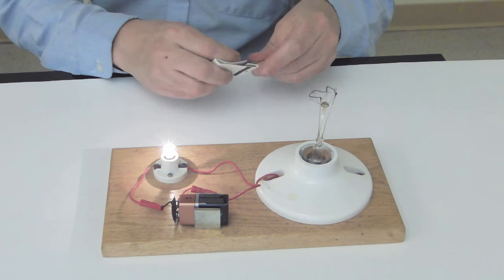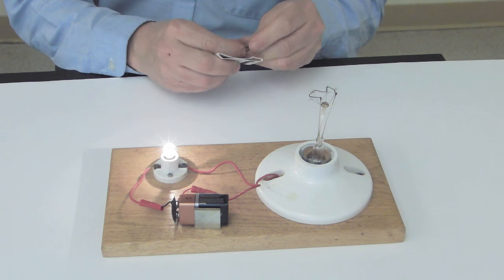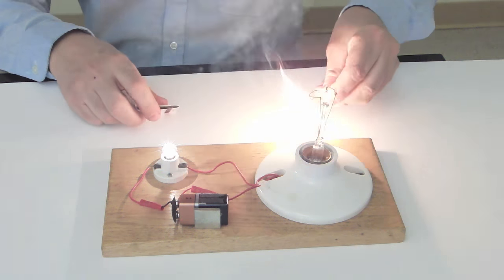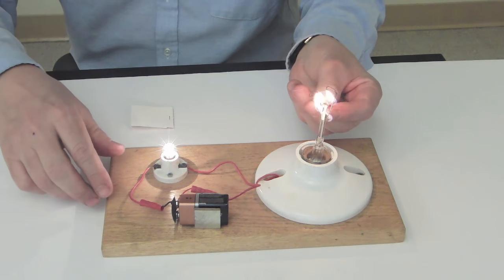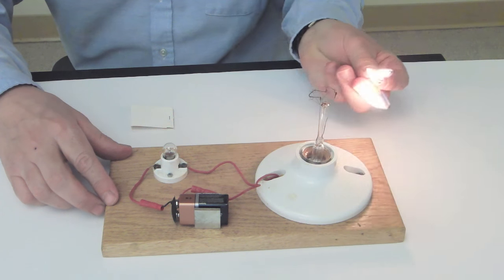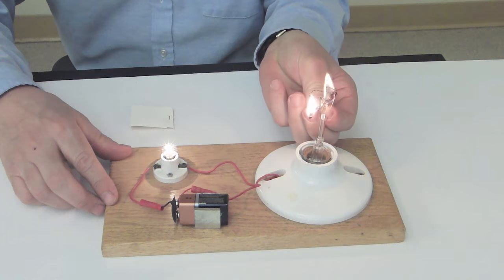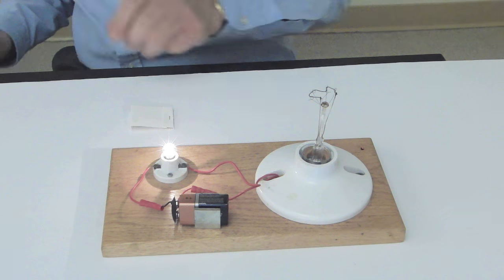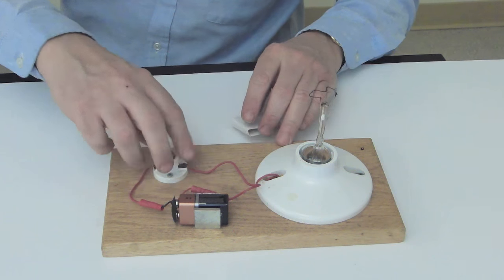Now, let's try heating that filament up a little bit with a match. The additional heat from the match raises the resistance inside the filament enough so that the little bulb goes out. It reduces the amount of electricity that can flow so that the bulb doesn't light. And when I take the heat away, it comes back on again.